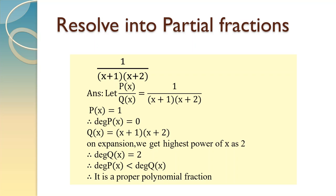1 upon x plus 1 into x plus 2. We will name this fraction as P of x upon Q of x. P of x is equal to 1, which is a constant, so degree of P of x is 0. Now Q of x is equal to x plus 1 into x plus 2. If we multiply these two brackets, we get the highest power of x as 2. So degree of Q of x is 2. Now degree of numerator is less than degree of denominator, so it is a proper polynomial fraction.